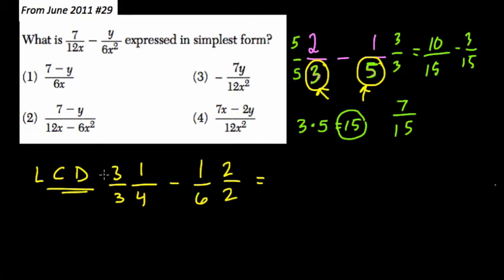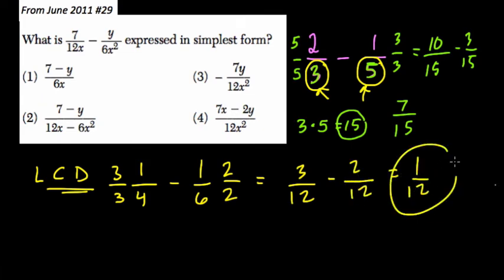Multiply each denominator by something so that they are both equal. And then just make sure you also multiply the numerator by the same value. So if I multiply this by 4, I then multiply the 1 by 3. If I multiply this 6 by 2, I do the same thing in the numerator. And then I get, of course, 3 twelfths minus 2 twelfths, which is our answer 1 twelfth.